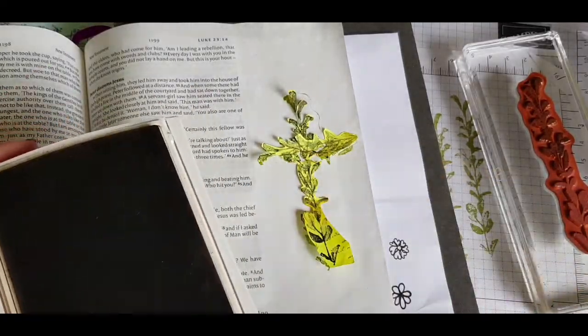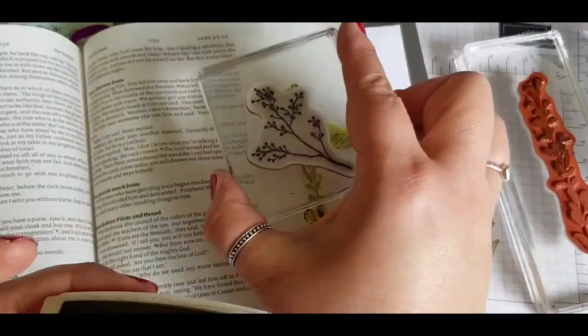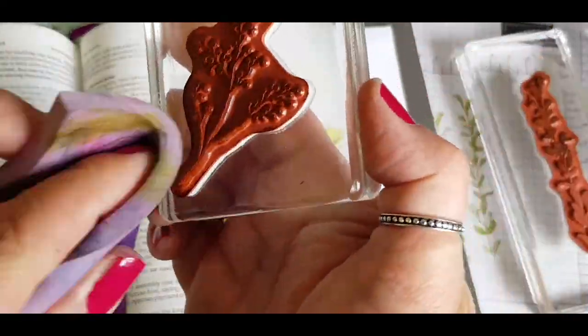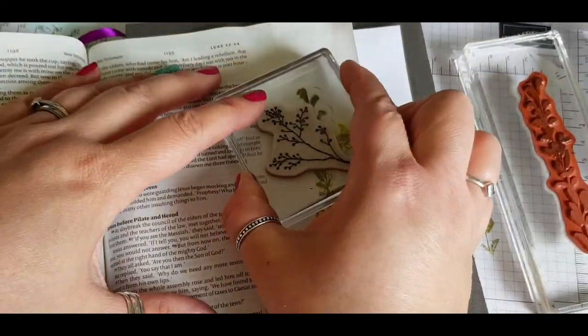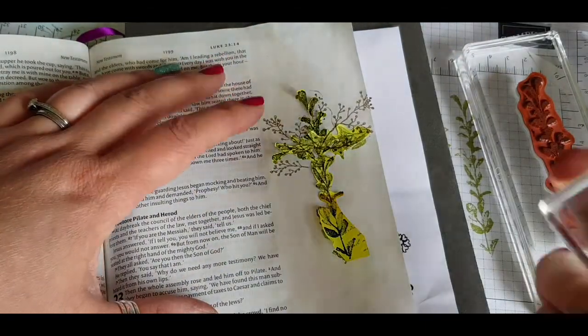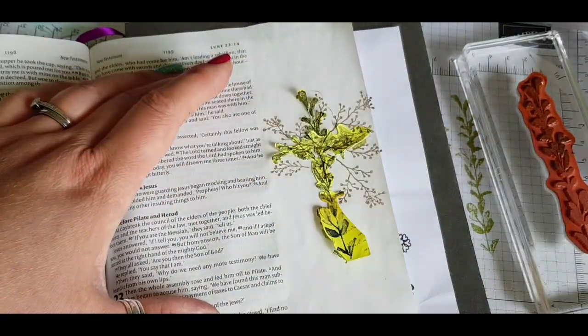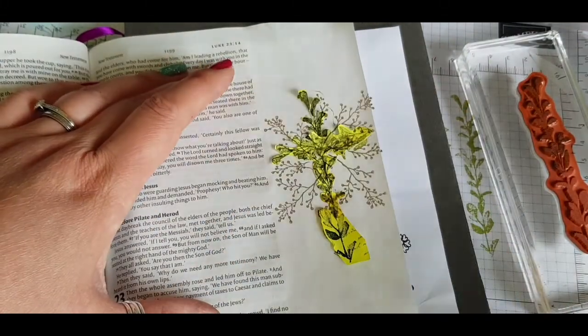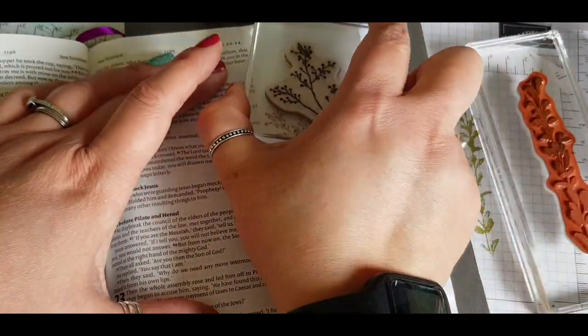I'm using Crumb Cake and then the sprig stamp, which is going around the cross shape. Again, like I said at the start, I'm going to do it slightly differently from the card, and I quite like the idea of these sprigs coming out from all around the cross.